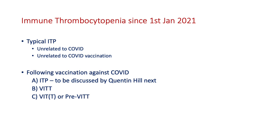In the last part of my lecture I'd like to talk about what happened from January 2021 when vaccination started. During this period we continued to see typical ITP completely unrelated to COVID and vaccination, but as the whole UK population was offered vaccination we started seeing patients with low platelet counts, the commonest type being ITP. We also saw something very unusual called VITT, which I'll discuss shortly.